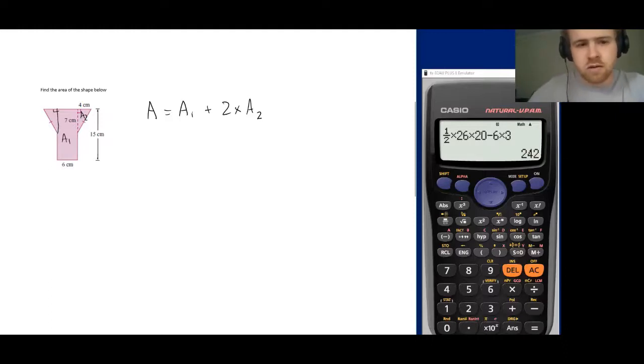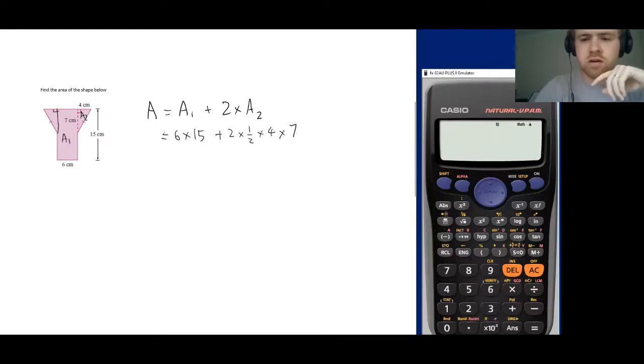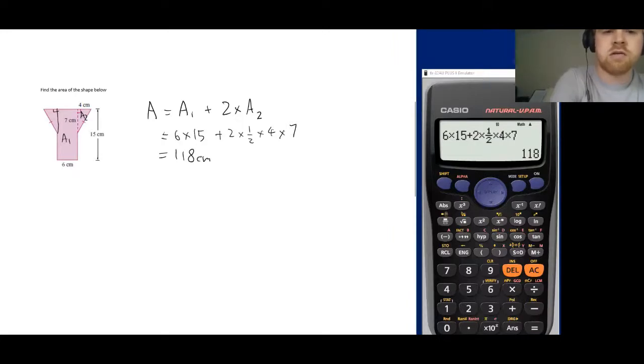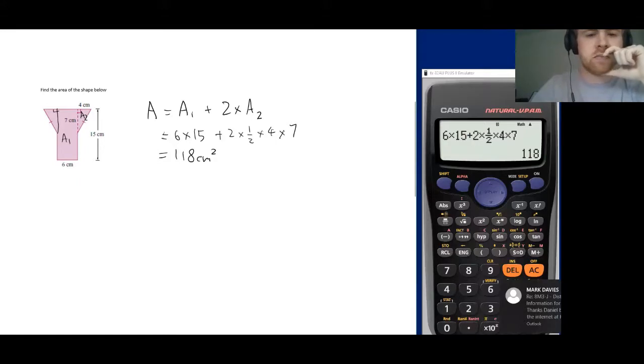Now we can do our substitution. Area one is a rectangle, it's going to be 6 times 15 plus two times, and it's a triangle so it's going to be half the base which is 4 and the height which is 7. Put that in your calculator, make sure it looks the same. I get 118 centimeters squared this time because that is what our units are in.